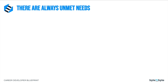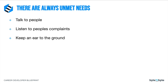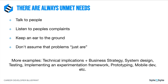Before we wrap up, I want to reiterate that there are always unmet needs. When it comes to finding them, it's really about looking in the right places. You can talk to people, listen to people complain, keep an ear to the ground, and hear what's coming through the grapevine. Don't assume that problems just are. Some areas where problems might exist include technical implications or business strategy, system design, testing, implementing an experimentation framework, prototyping, and mobile dev. These are all areas where there might be problems you could potentially solve.